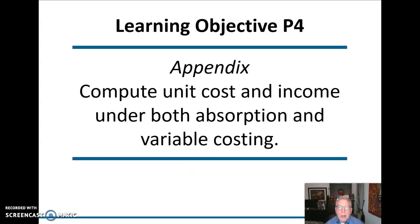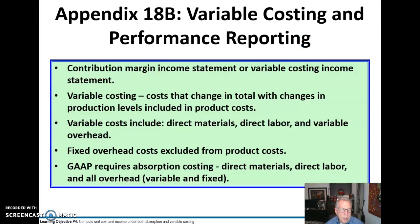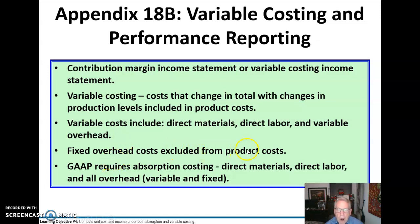We're going to compute unit cost and income under both absorption and variable costing. Here we have our standard contribution margin statement. Under variable costing, the variable costs are going to include direct materials, direct labor, and variable overhead only. Fixed overhead costs are going to be excluded from our product costs. Under absorption costing, which we've learned so far, fixed costs are included — and that's what generally accepted accounting principles require.